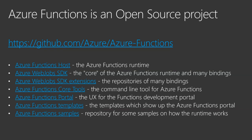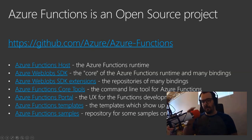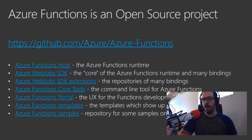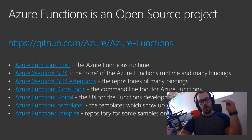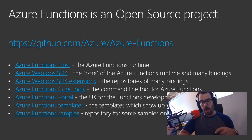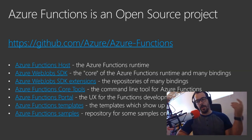All those links are found at github.com/Azure/Azure-functions, which links to all the others. Not only is the runtime open source, but the SDK, all the extensions, all the triggers, all the inputs and outputs — all that code is open source. The CLI we use is open source. The portal UI on portal.azure.com is open source, as well as all the samples and templates.